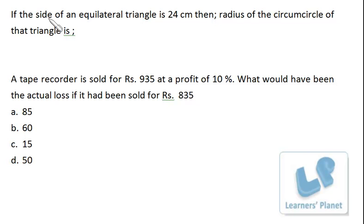If the side of an equilateral triangle is 24 centimeters, then radius of the circumcircle of the triangle. In the basic sessions of circle, I have given you the formula for circumradius: r is equal to ABC by 4 delta. Here ABC are the sides of the triangle and delta is area of the triangle. So r is circumradius, ABC sides, and 4 area.